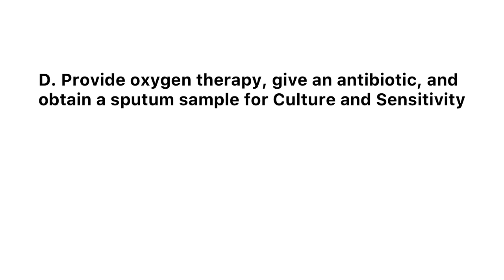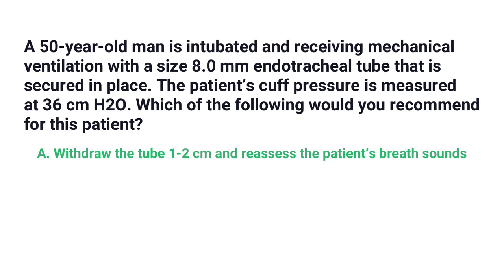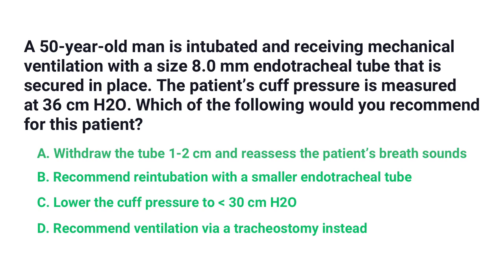A 50-year-old man is intubated and receiving mechanical ventilation with a size 8 endotracheal tube. The patient's cuff pressure is measured at 36 centimeters of water pressure. Which of the following would you recommend? A) Withdraw the tube one to two centimeters and reassess breath sounds, B) recommend re-intubation with a smaller endotracheal tube, C) lower the cuff pressure to less than 30 centimeters of water pressure, or D) recommend ventilation via a tracheostomy instead. The correct answer is C: lower the cuff pressure to less than 30 centimeters of water pressure.